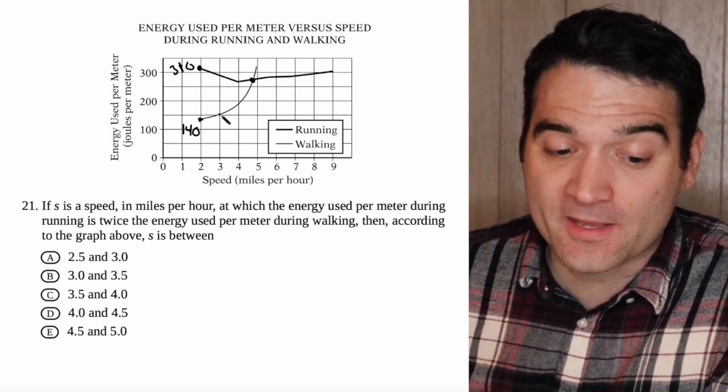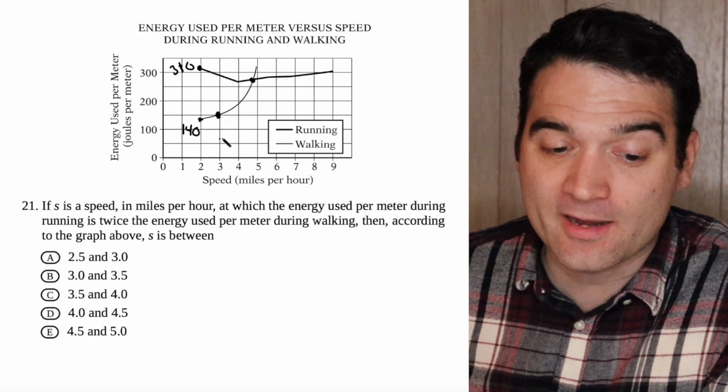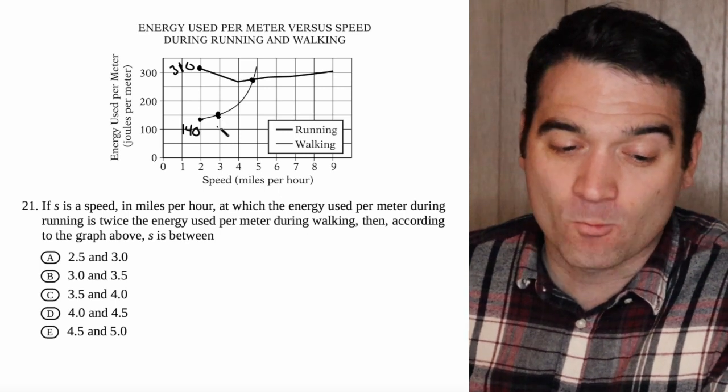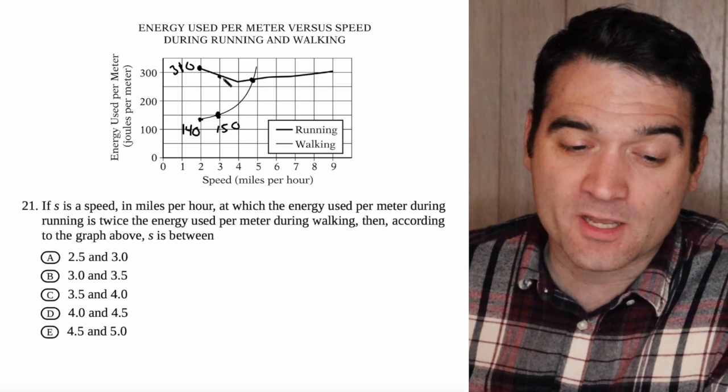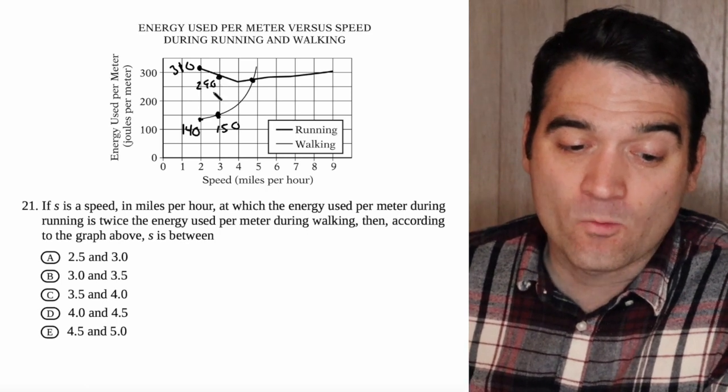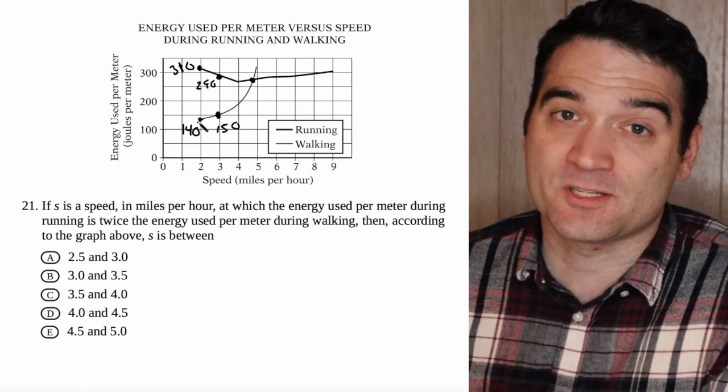But if we go over here to 3, when I'm walking, I'm using, what is that, 150. And when I'm running, I'm using about 290. Well, that's less than 2 times as much.